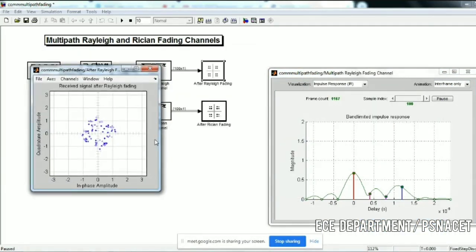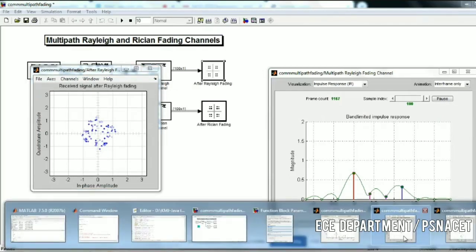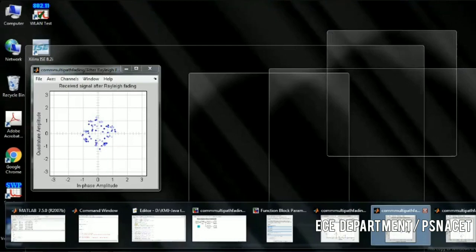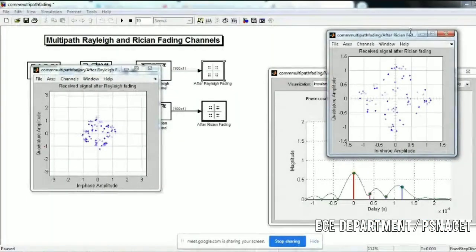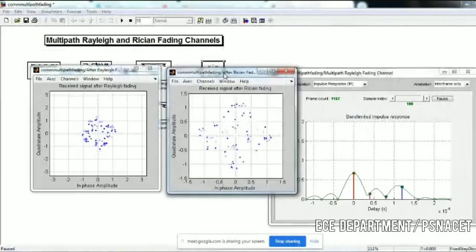This is the constellation. Compared to Rayleigh, Rician is more complex. This is the received signal after Rician fading.